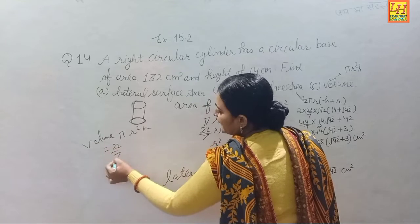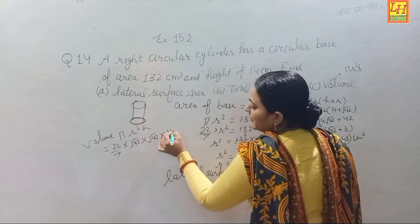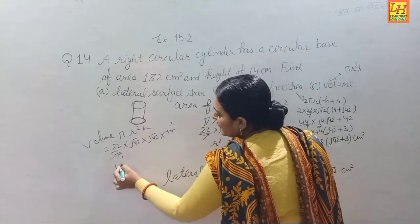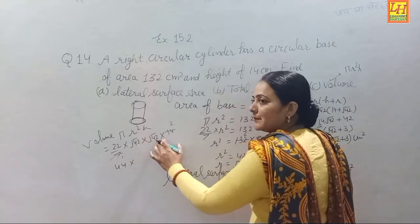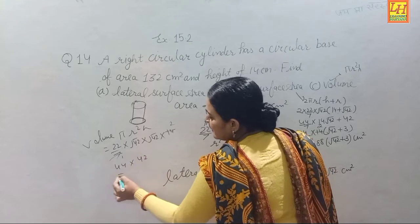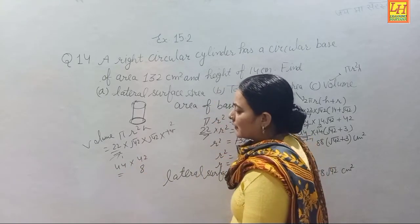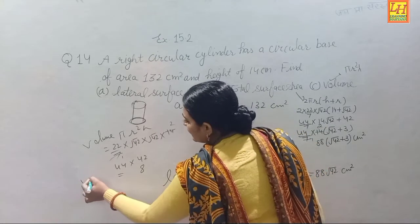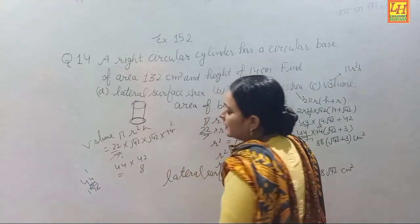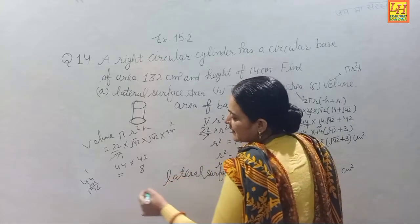Total surface area = 2πr(h + r) = 2 × (22/7) × √42 × (14 + √42). Calculating: 44 × (14√42 + 42) / 7, which simplifies to give a total surface area of 184 square centimeters (approximately).